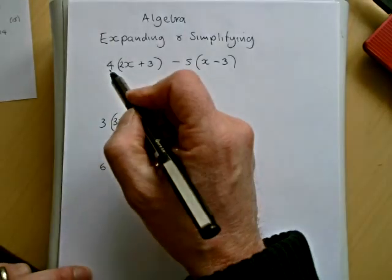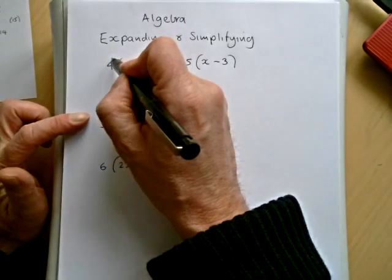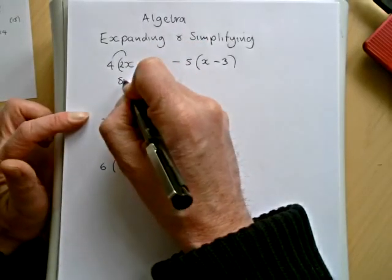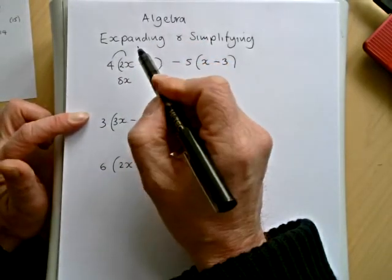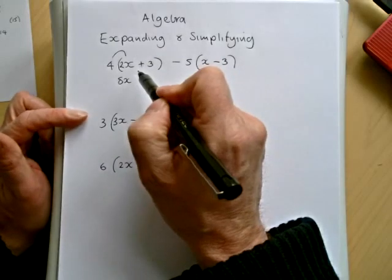So in our first expansion, I'm going to do 4(2x+3) - 5(x-3). I have done simpler videos on this topic, so I hope you've seen the easier ones first before you try these.